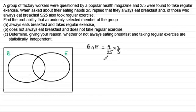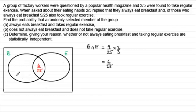Working that out gives us six-twenty-fifths, which we pop in the middle — the intersection of B and E. Now we can work out the other two regions. For those that just ate breakfast, we do two-thirds minus six-twenty-fifths, which comes to thirty-two seventy-fifths. And for those that just take exercise, we do two-fifths minus six-twenty-fifths, which comes to four-twenty-fifths.